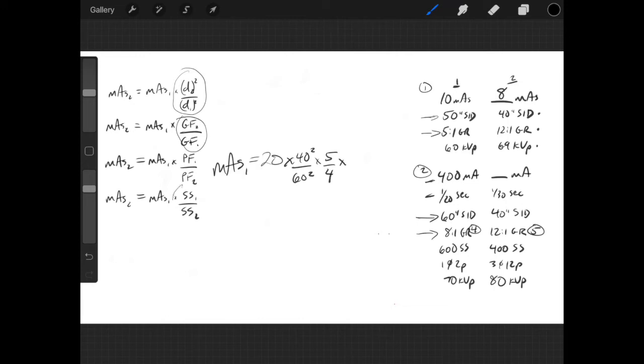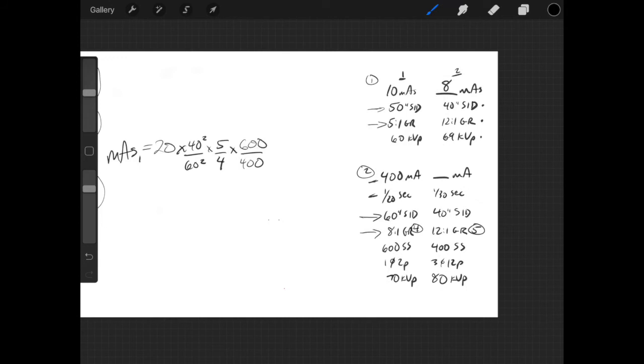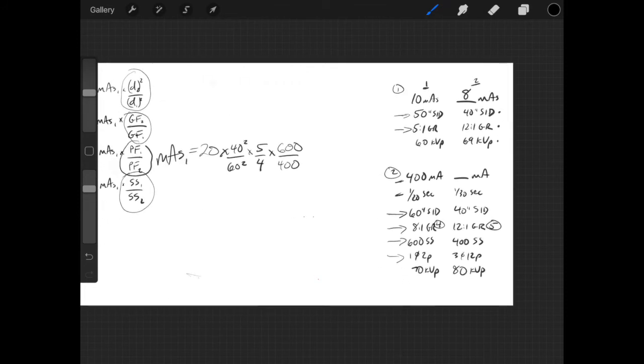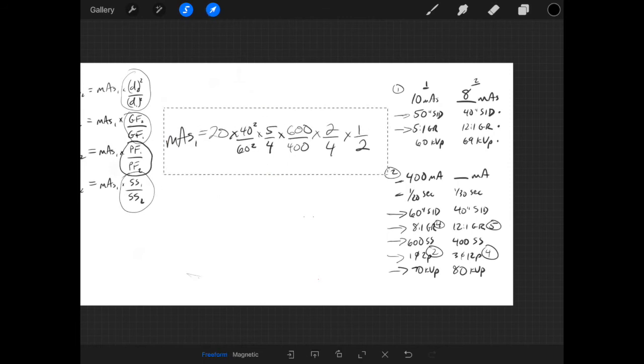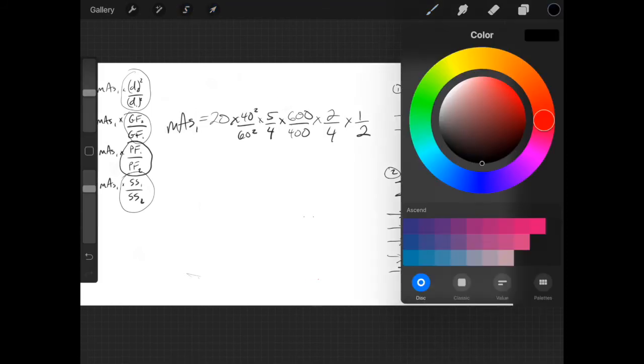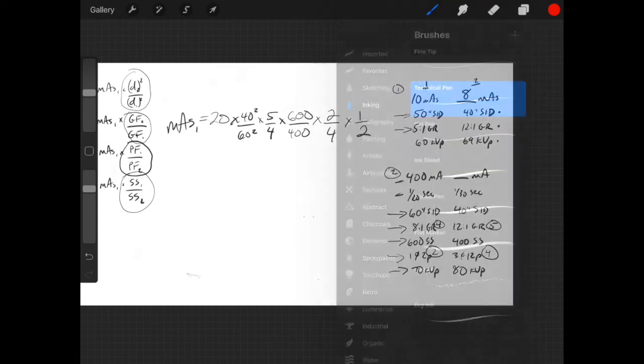Times, we have screen speed. We're going screen speed 1 over 2, so 600 over 400. I'm going to run out of room here. All right, so I've moved over. Then we're going from a single phase 2 pulse machine to a 3 phase 12 pulse machine. We're going power factor 1 over power factor 2. Power factor 1 is 2, power factor 2 is 4. And then finally, we have an increase in kVp, approximately 15%, so we're going to half our mAs. Let's move this to the middle here to give us some space.